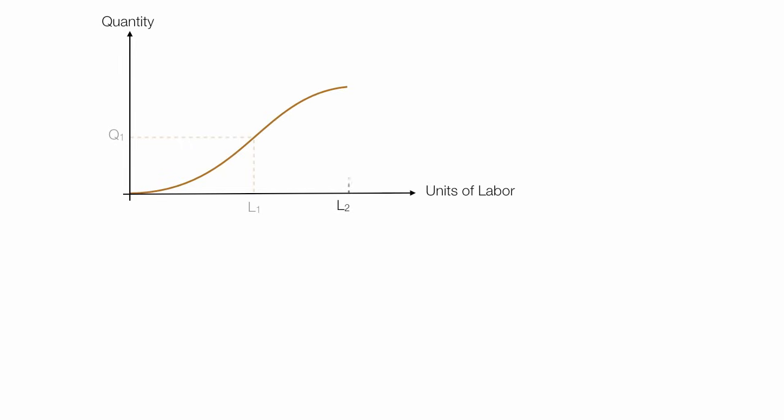Now, L2 is my labor, and Q2 is my quantity. But if I keep adding labor, a point comes in time where I'll actually produce less. So I have L3 and Q3. And you'll learn why that is in this video and the subsequent two videos.